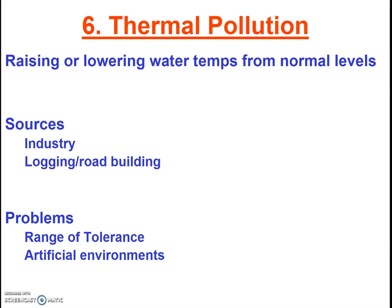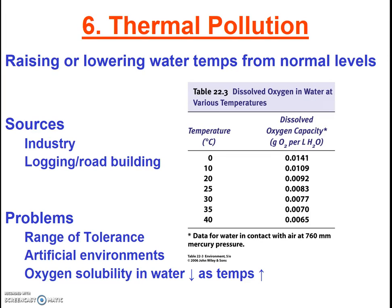For example, downstream from a power plant in Minnesota, there is now a year-round population of geese because the river does not freeze over as it normally would. This can have disruptive effects on local ecosystems and on the ecosystems from which those geese are now absent. Another important issue is oxygen depletion — warmer water holds less oxygen than cooler water. Some fish may not survive in warmer water because there's not enough oxygen present. Trout, salmon, and steelhead all require high oxygen levels, while catfish and carp can gulp oxygen at the surface and are likely to find warmer conditions favorable.